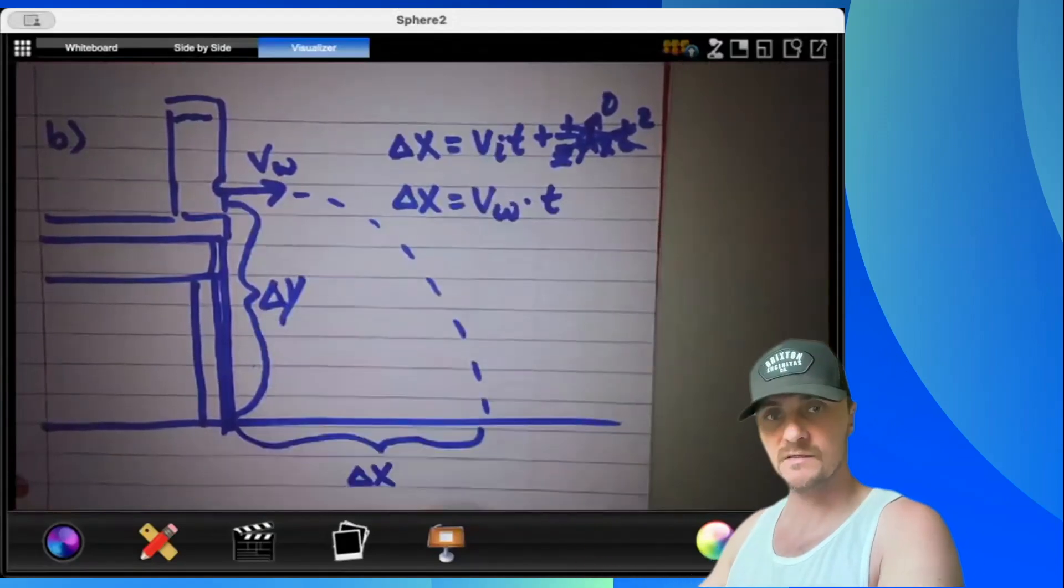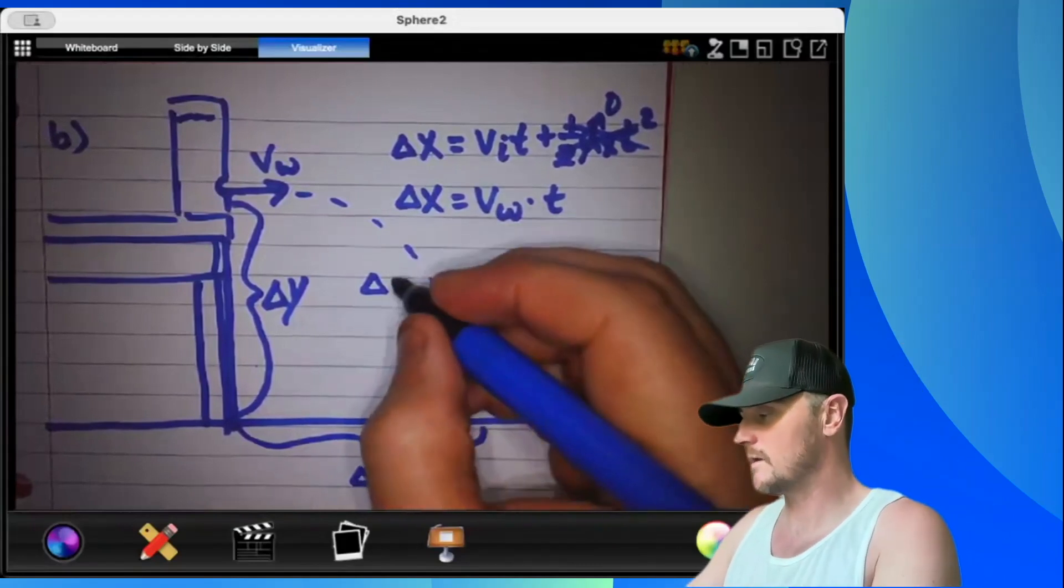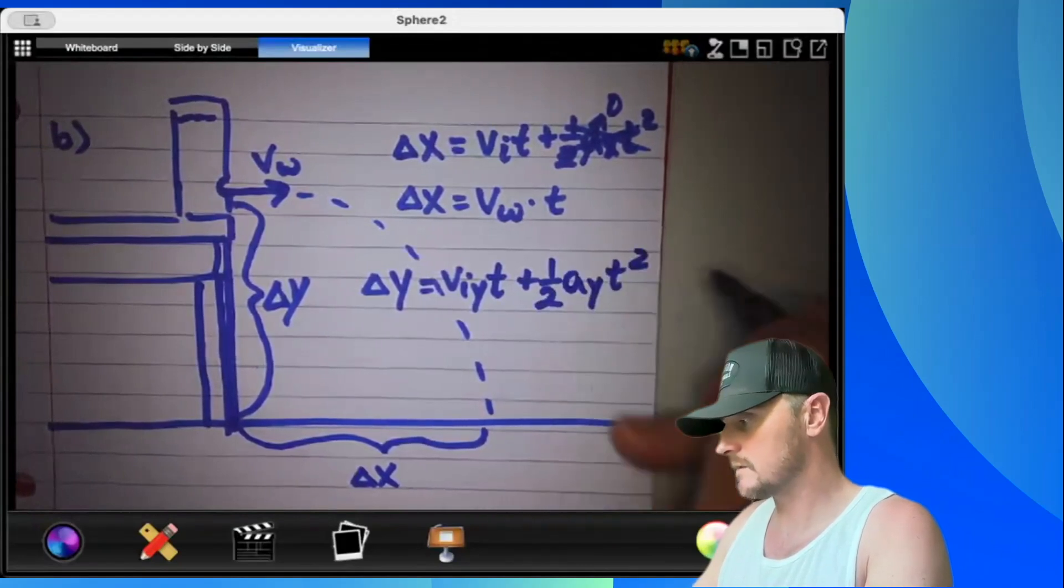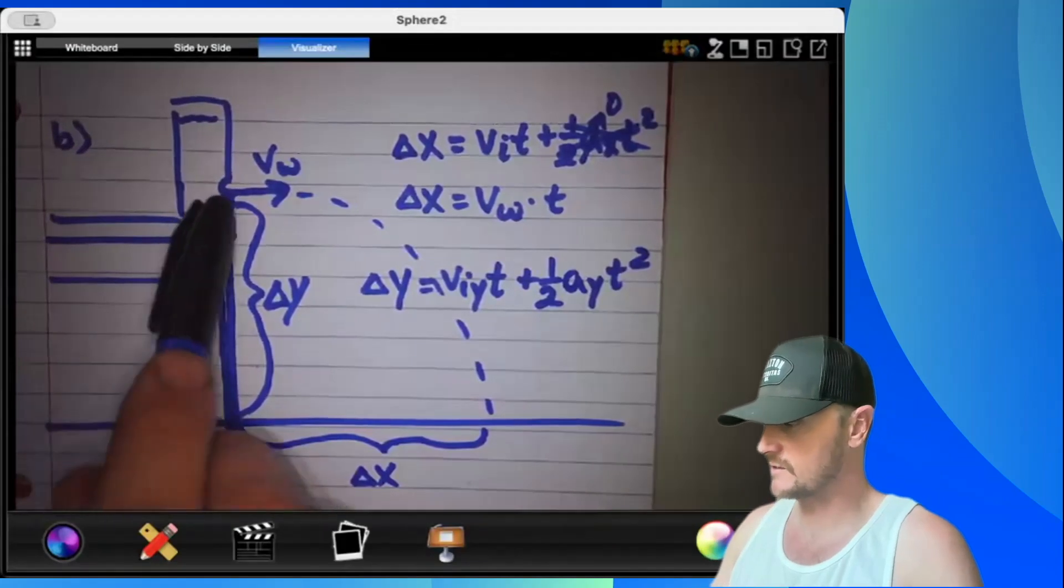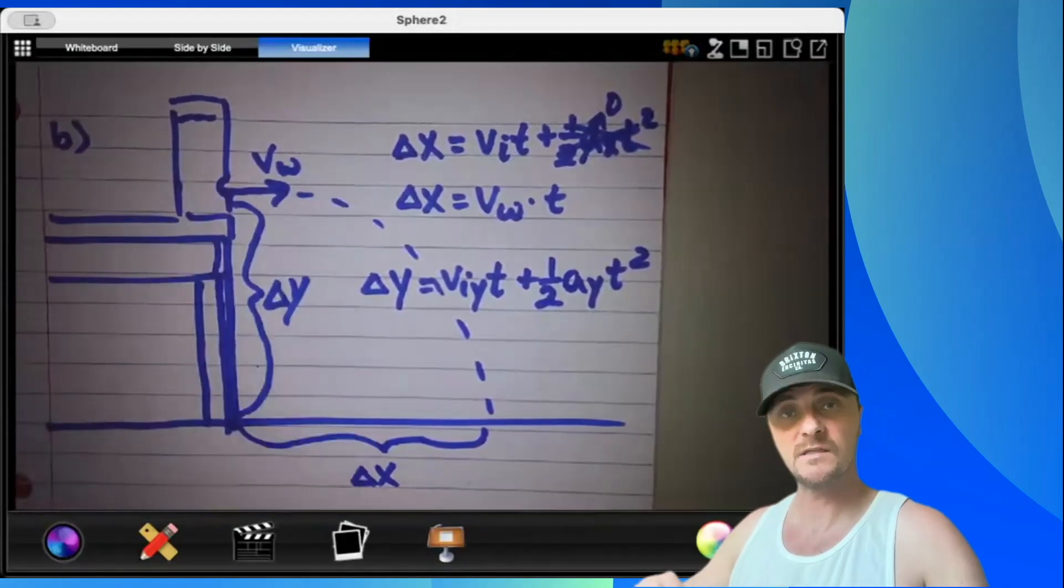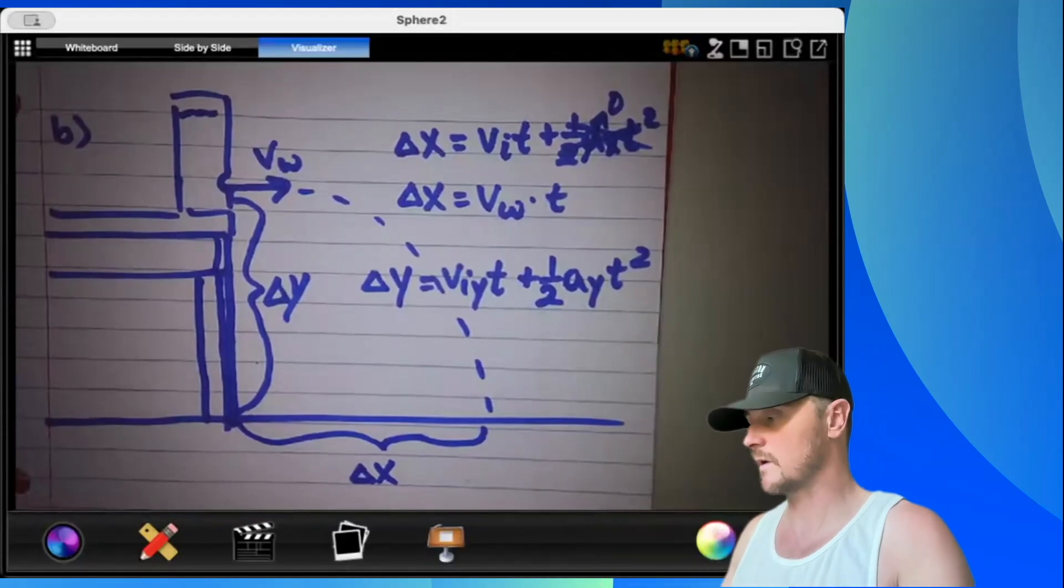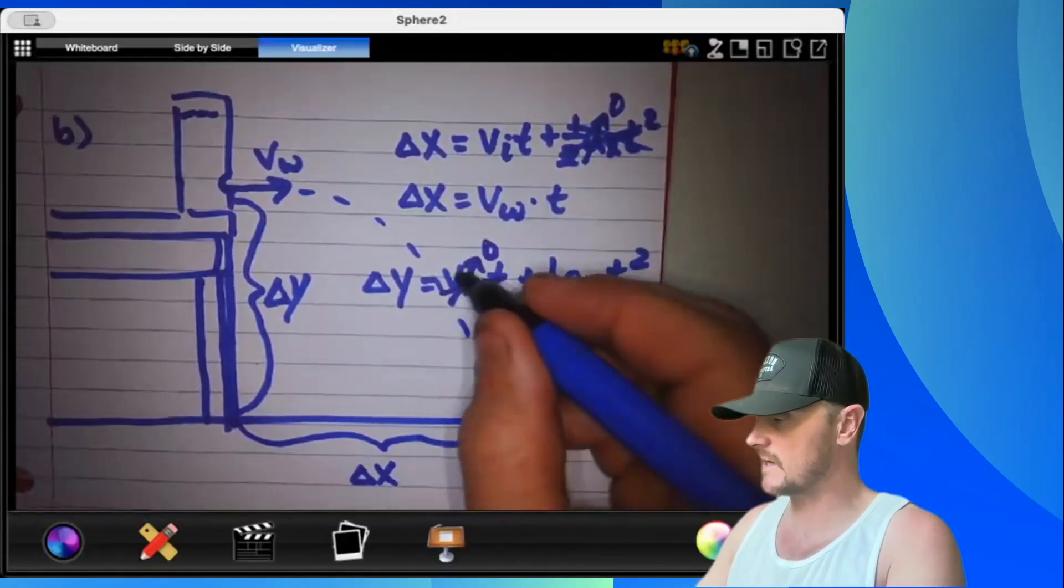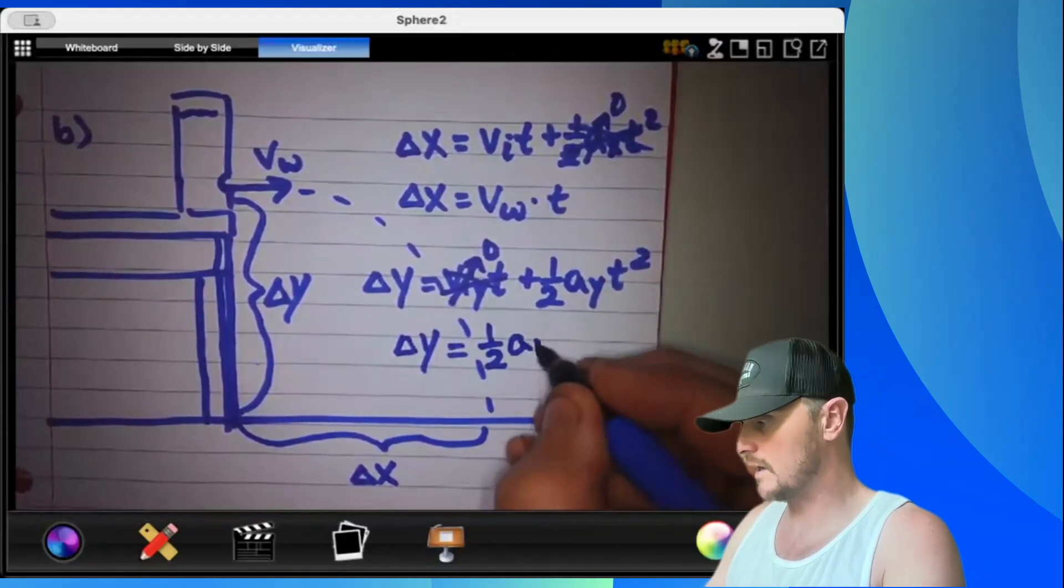The only acceleration that exists is gravitational acceleration in the Y axis and therefore this A X is zero. So let's plug in to this equation. Delta X equals the velocity of the water times time. Let's go to the Y axis next. Delta Y equals VIY T plus one half A Y T squared. When you have this kind of situation where the projectile is going out strictly horizontally, there is no initial Y velocity.